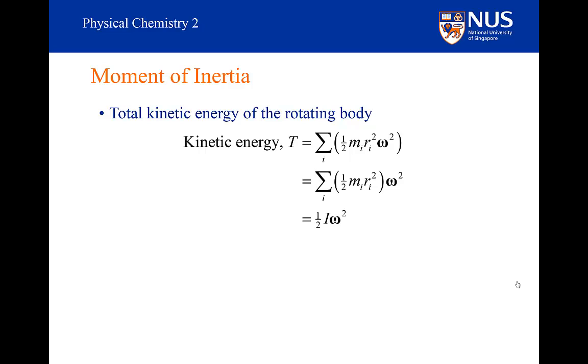This sum is the moment of inertia. So now the equation for the total kinetic energy is equal to a half times the moment of inertia i times omega squared. The form of that equation is quite familiar for kinetic energy. The kinetic energy of a linear moving body is just a half mv squared, whereas the kinetic energy of a rotating body is a half i omega squared.